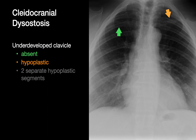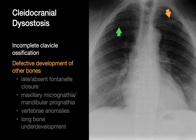Cleidocranial dysostosis is one of the two uncommon congenital chest wall variants to know. In folks with this disorder the clavicle may be entirely absent, as on the right side in this patient, or hypoplastic, as on the left side. Sometimes in cleidocranial dysostosis the clavicle may appear as two separate hypoplastic segments. It's believed to be a consequence of abnormal ossification of the clavicles, and abnormal ossification of other bones can also happen, resulting in features like delayed fontanelle closure, facial bone issues, unusual vertebral bodies, and underdevelopment of long bones.